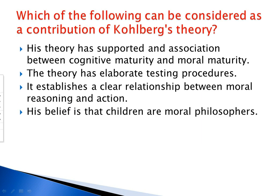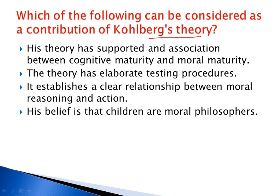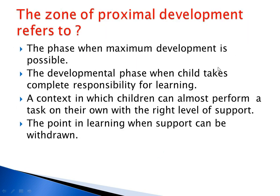Question 8: Which of the following can be considered a contribution of Kohlberg's theory? Kohlberg gave moral theories related to moral values and moral development of the child. His theory supported an association between cognitive maturity and moral maturity. This is the correct option — Kohlberg's theory supported an association between cognitive maturity and moral maturity.